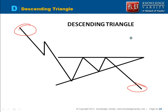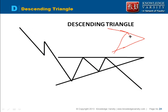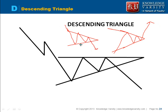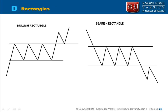The continuation of the pattern will be observed — if it is decreasing, it will continue decreasing. Another pattern is the symmetrical triangle. The price will oscillate and then break out either upward or downward depending on the prior trend. In a symmetrical triangle, you have lower highs and higher lows.